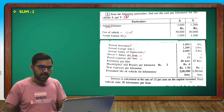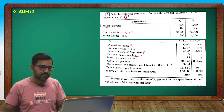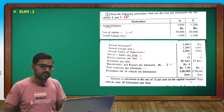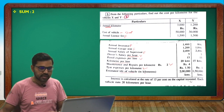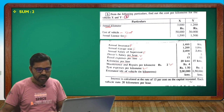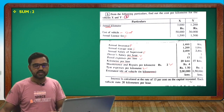Other variable expenses include maintenance and repairs, tire expense, estimated life of vehicles in kilometers, and depreciation provision.